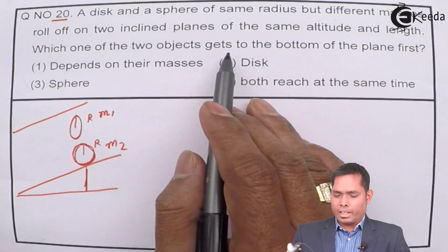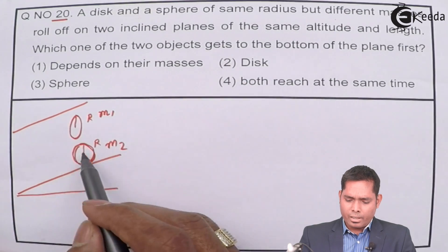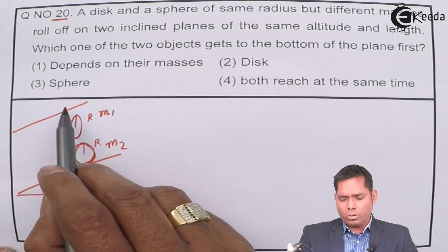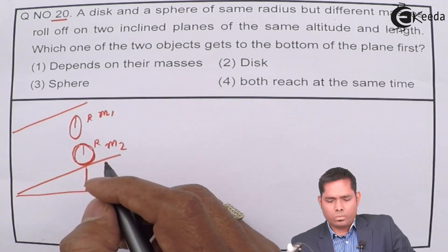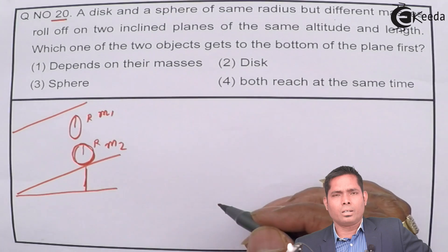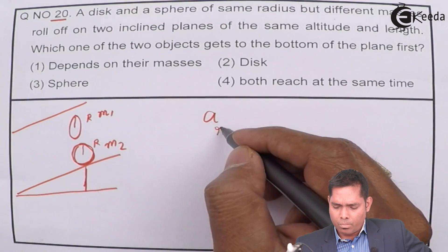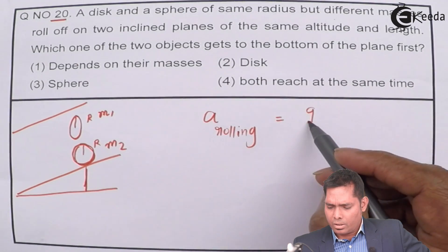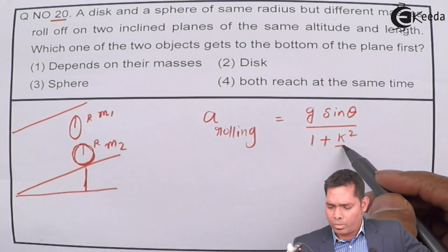Which one of the two objects gets to the bottom of the plane first? Both are released from rest, so both have initial velocity zero. Therefore, the one with greater acceleration will reach the bottom first. The acceleration for a body rolling is given by a = g sinθ / (1 + k²/r²).